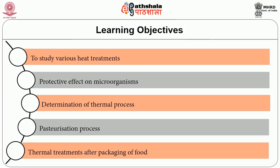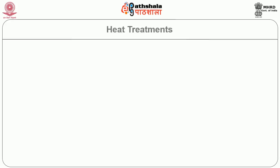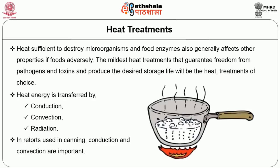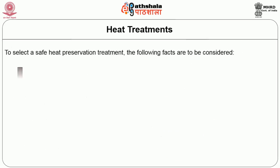Thermal processing takes place by two methods: heating or cooling. After going through this session, you will be able to understand the various heat treatments used in thermal processing, the protective effect on microorganisms, determination of thermal process, the pasteurization process, aseptic packaging, and the different thermal treatments after packaging of food. Heat sufficient to destroy microorganisms and food enzymes also generally affects the other properties of foods. Heat energy is transferred by conduction, convection, and radiation; in retorts used in canning, conduction and convection are important.